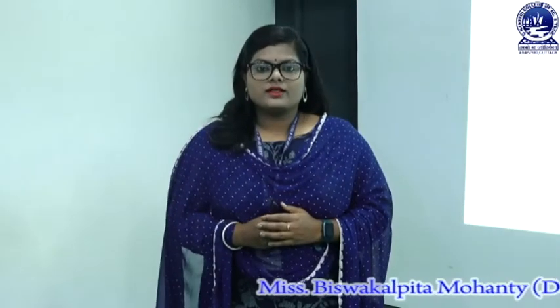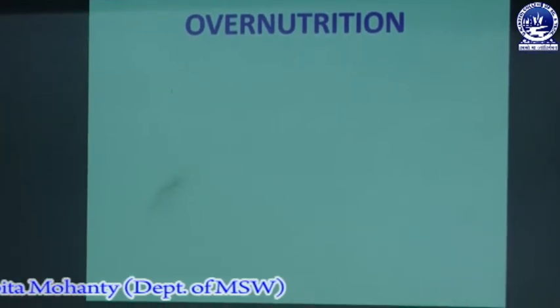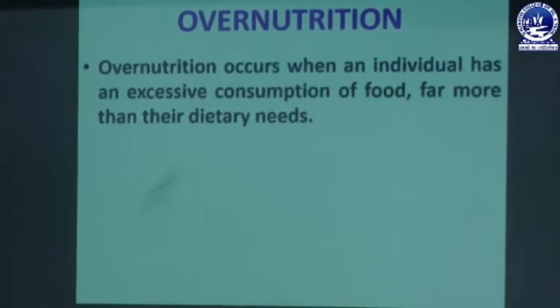Now in this class we will discuss what is over nutrition and what are the problems or diseases related with over nutrition. Over nutrition occurs when an individual has an excessive consumption of food, far more than their dietary needs. When a person is taking over food which is more than necessary, or taking an imbalanced diet more than required, then the person is known as having over nutrition.